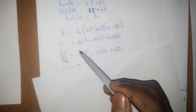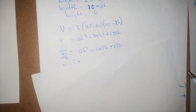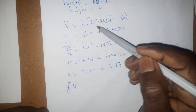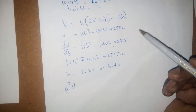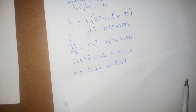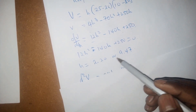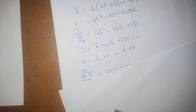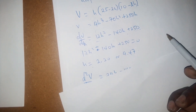Volume = length × width × height = (25 − 2h)(10 − 2h) × h. Expanding and simplifying this expression, we differentiate to find dV/dh = 4h² × 3 − ... giving 12h² − 140h + 250. We set this equal to zero and solve using the quadratic formula.